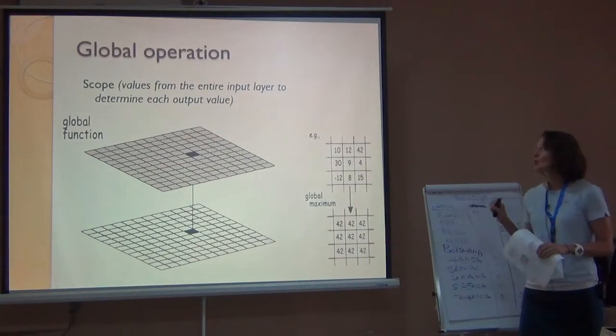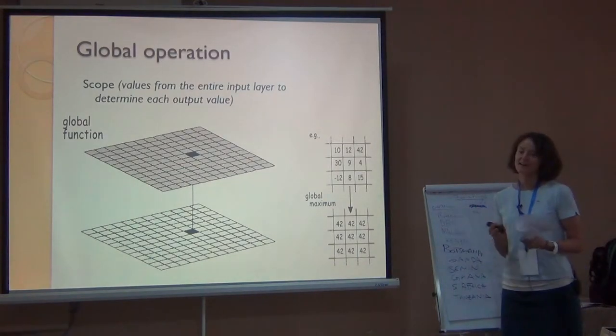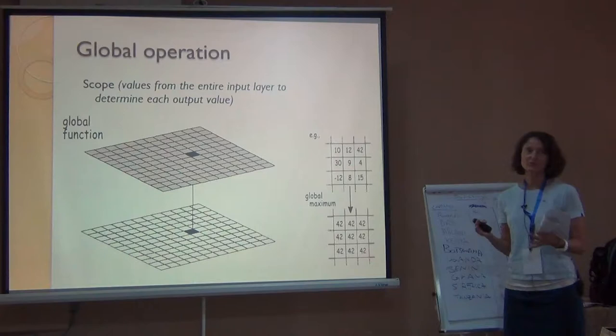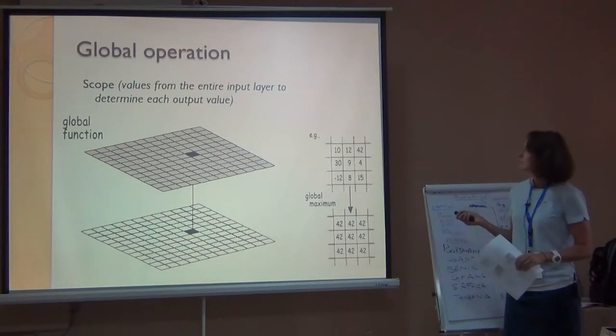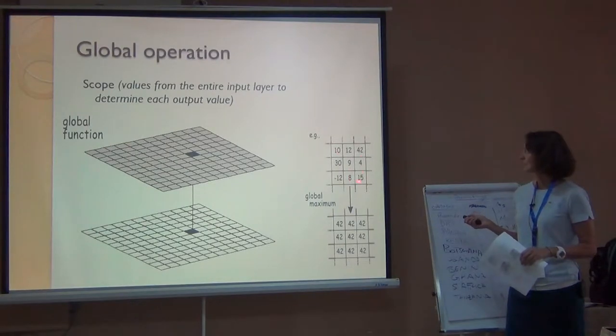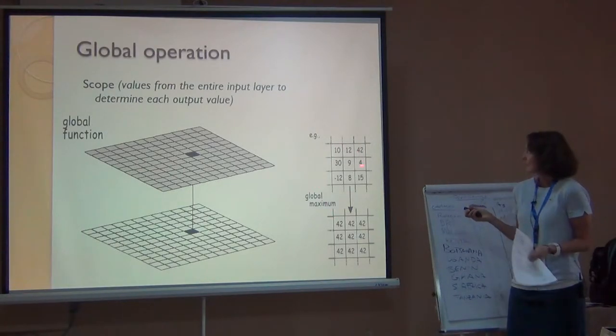Here we're going to do global operations, where the scope of what you consider for your answer at each pixel is dependent on the entire input raster or sets of input rasters. So if we pretend that we have a 3 by 3 landscape, 9 pixels, that's our entire landscape, and we're asking for the global maximum, then the biggest value in here, the maximum, is 42.